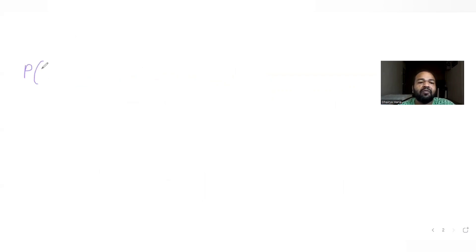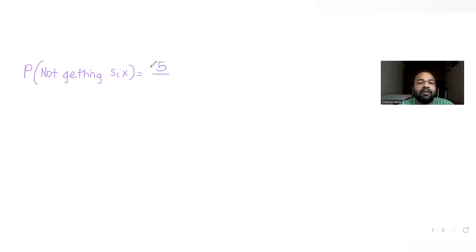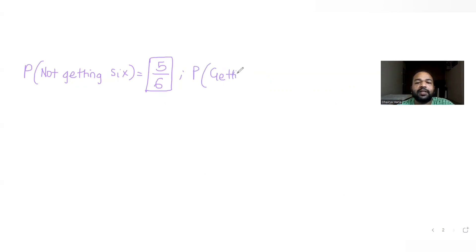We have been told that we stop throwing the die until we get a 6. The probability of not getting a 6 when you throw a die — out of 6 outcomes, you will not have 6, so you can have any one of the remaining 5 outcomes as favorable. So probability of not getting a 6 is 5 by 6, and probability of getting a 6 is 1 by 6.